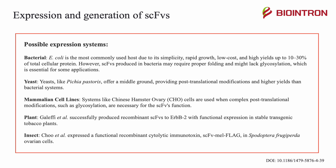Another example is plants — one team successfully produced recombinant single-chain variable fragments to ERBB2 with functional expression in stable transgenic tobacco plants. Finally, insect cells have also been used: Chu and the research team expressed a functional recombinant cytolytic immunotoxin SCFV-MEL-FLAG in Spodoptera frugiperda ovarian cells.